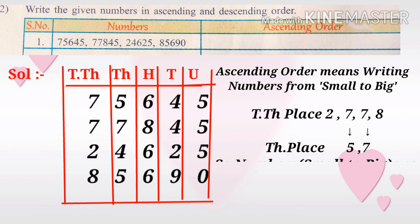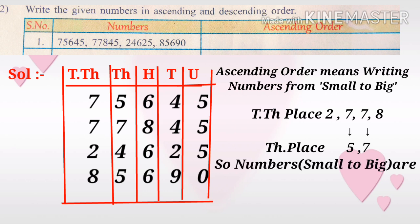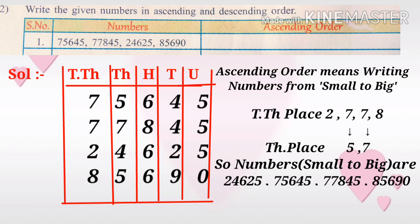For the two numbers with 7 in the ten thousands place, those digits are equal, so compare the thousands place — we get digits 5 and 7. Numbers from small to bigger in thousands place: the number with 2 is twenty-four thousand six hundred twenty-five.